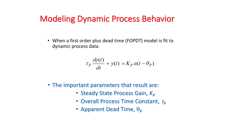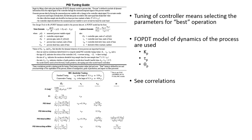This model has three constants to pay attention to: k_p (the steady-state gain), tau_p (the overall process time constant), and theta_p (the apparent dead time). These three parameters come from our process model so that eventually we can use tuning correlations.